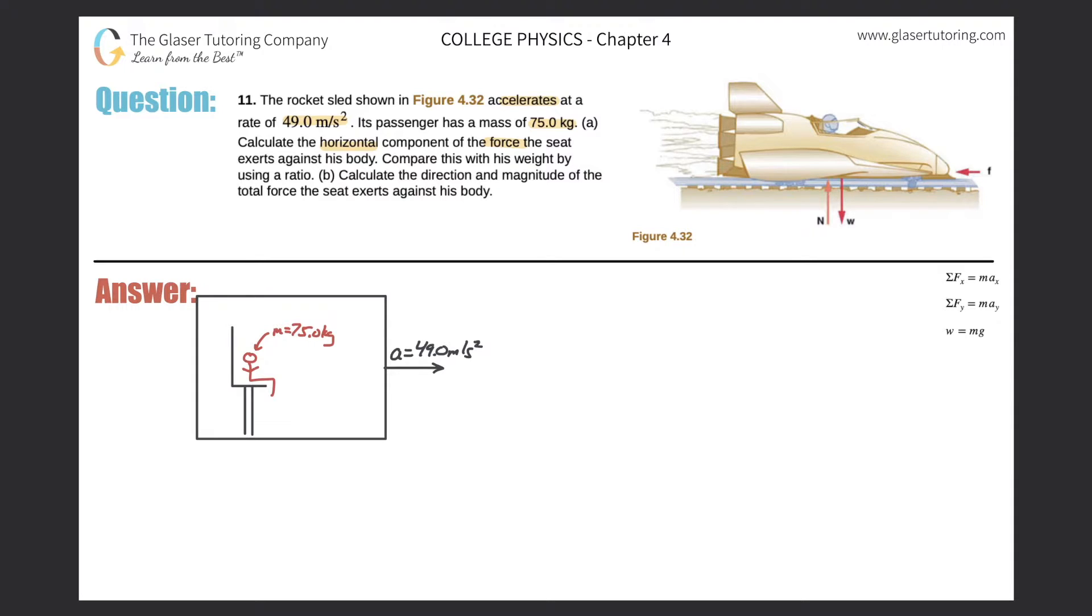Alright, so here in the picture the box will represent the spaceship and has an acceleration going in the positive x direction of 49 meters per second squared. The individual here has a mass of 75 kilograms.